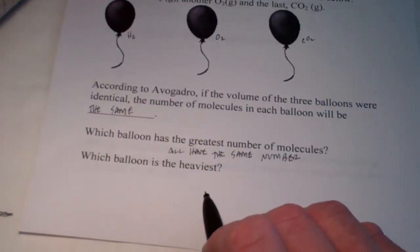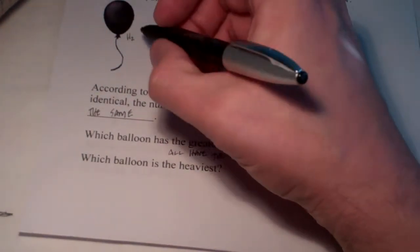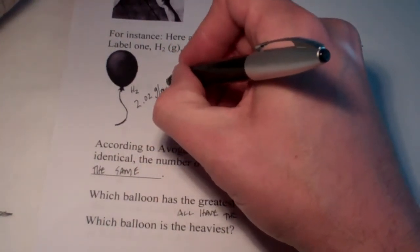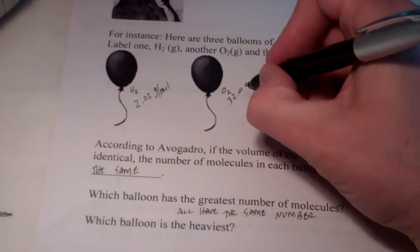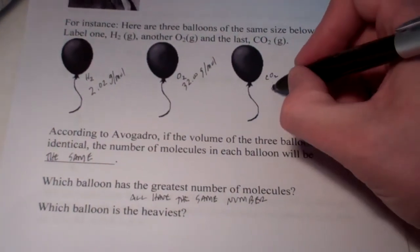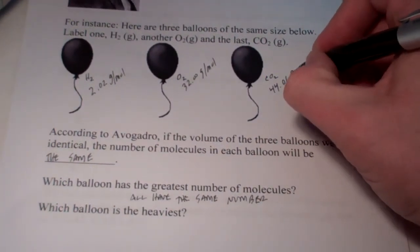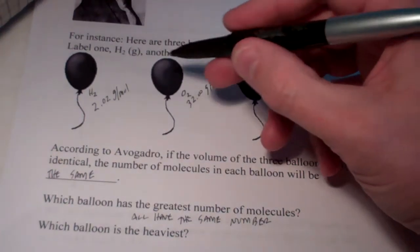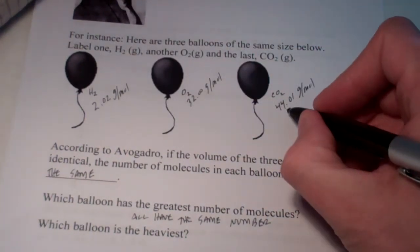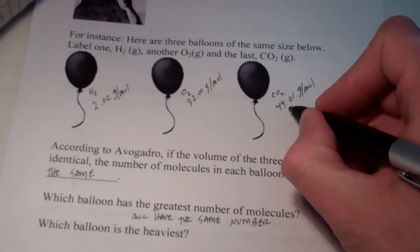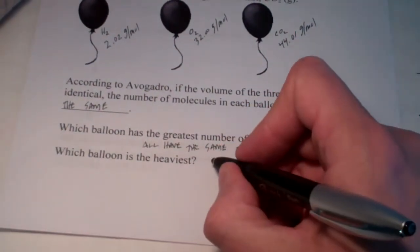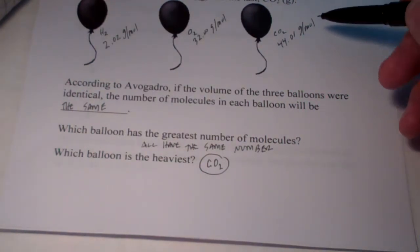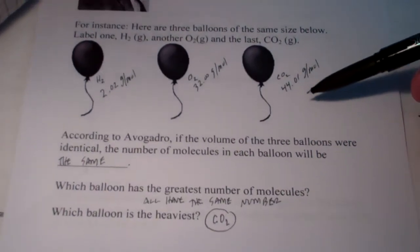Now, this is different. Which balloon is heaviest? Well, let's see. Hydrogen gas, we know, has a molecular weight of 2.02 grams per mole. Oxygen gas, 32.00 grams per mole. And carbon dioxide is 44.01 grams per mole. So, if they have the same number of molecules, and let's just say, for the sake of argument, they have one mole of each of those gases. Won't the one that contains carbon dioxide be the heaviest? Because its molecules weigh the most. So, which balloon is heaviest? That would be the CO2-filled balloon.